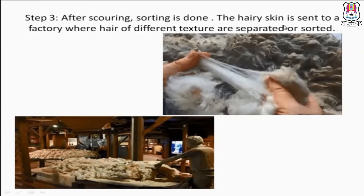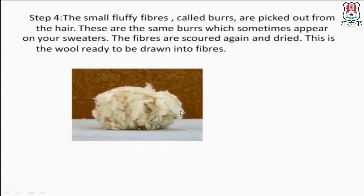Step 3 — Sorting: after scouring, sorting is done. The hairy skin is sent to a factory where the hair of different textures are separated or sorted. Scouring hone ke baad sorting — jo bade hain unko alag karenge, jo chote hain unko alag karenge — yeh sab factories mein hota hai.